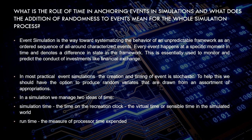The next question is: what is the role of time in event simulation, and what does the addition of randomness to an event mean for the whole simulation process? Event simulation is the process of modeling the behavior of an unpredictable framework as an ordered sequence of well-characterized events. Every event happens at a specific moment in time and causes a change of state in the framework. This is essentially used to monitor and predict the behavior of investments like financial expenses.